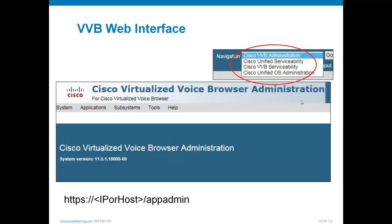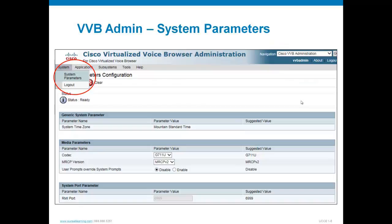Starting top left under System, there are system parameters with a couple of basic options. It should be noted that in version 11.5, the only codecs available are G.711 mu-law and a-law. If you open the drop-down list, there's no G.729 support. There's not much to change on this first system parameters screen overall.